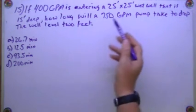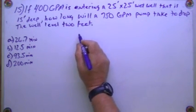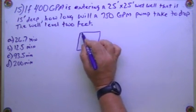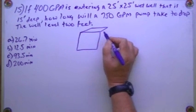Alright, let's start by drawing this wet well. This guy is going to be square because it's 25 by 25.